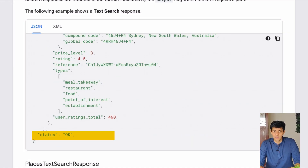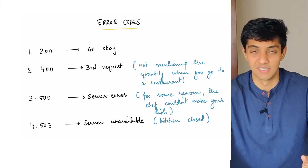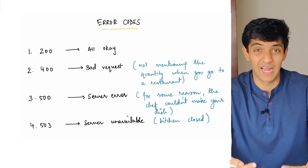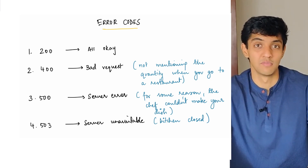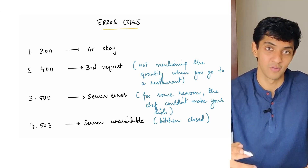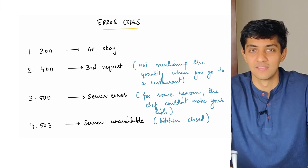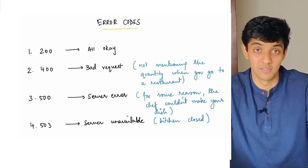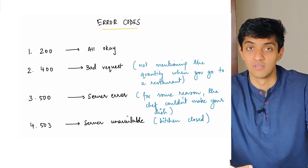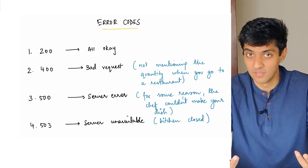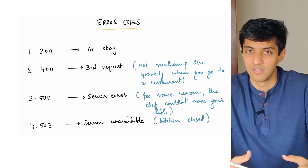One thing to note is that if you look at the response, you also get something called a status. A status tells you how the response went. The most common one is status OK or code 200 — meaning everything went fine and here's your response. Status 400 means it was a bad request that could not be understood — like going to a restaurant and mentioning a dish without the quantity. Status 500 means your request was good but the dish could not be prepared — maybe the electricity went out or items were unavailable. Status 503 means the kitchen or restaurant was unavailable — like arriving at midnight when the restaurant is already closed.